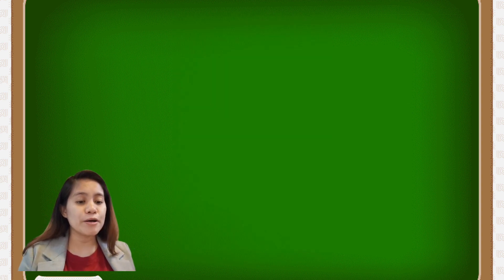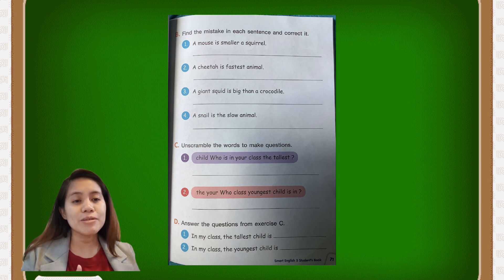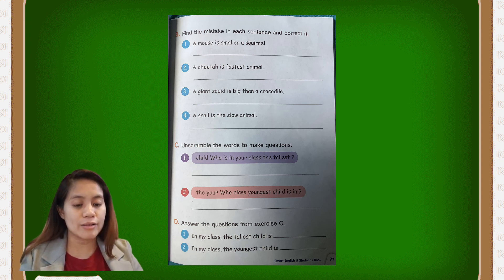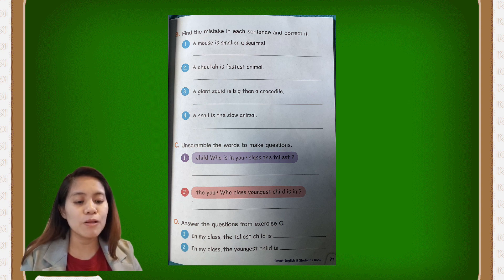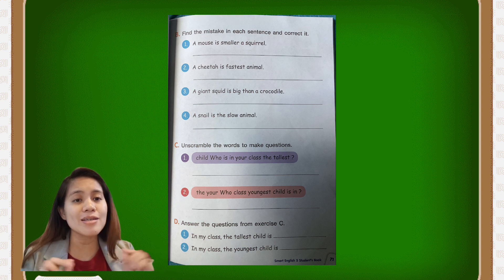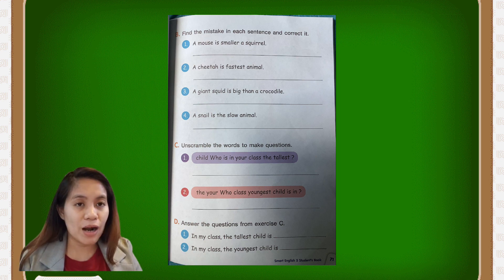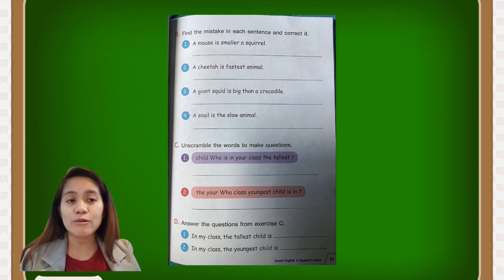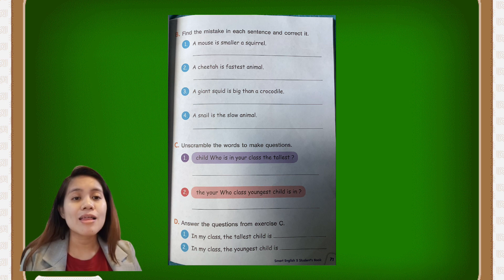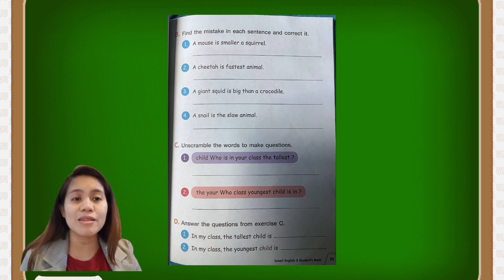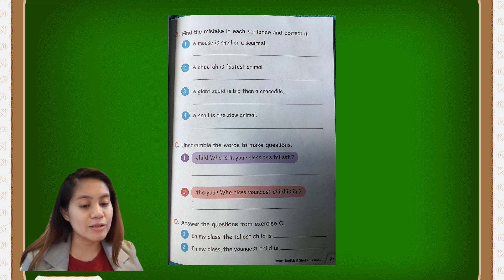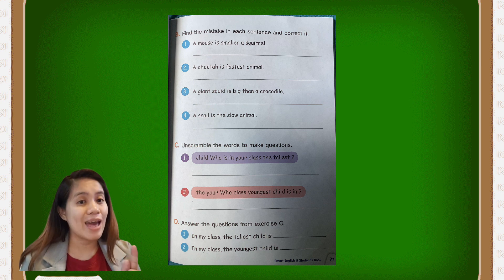For letter B, you can find the mistake in each sentence and correct it. For example, 'a mouse is smaller than a squirrel' — you are going to identify which word is wrong and write the correct word. So you rearrange to make the correct sentence: a mouse is smaller than a squirrel.